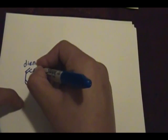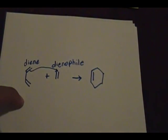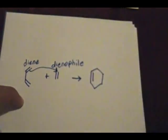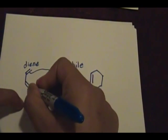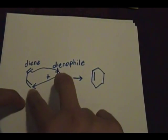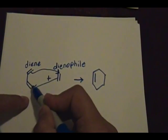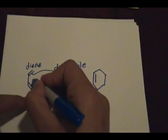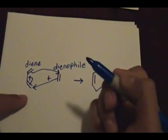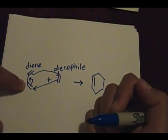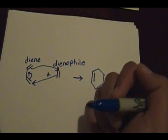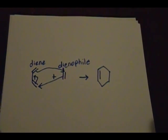The pi electrons from the double bond attack this carbon to form a single bond between these two carbons. The pi electrons over here attack here to form a new double bond between the other two carbons. This all happens at the same time — the whole reaction is concerted. That tells us that it retains stereochemistry, so if you start off with a dienophile that's in the trans configuration, the product also remains trans.